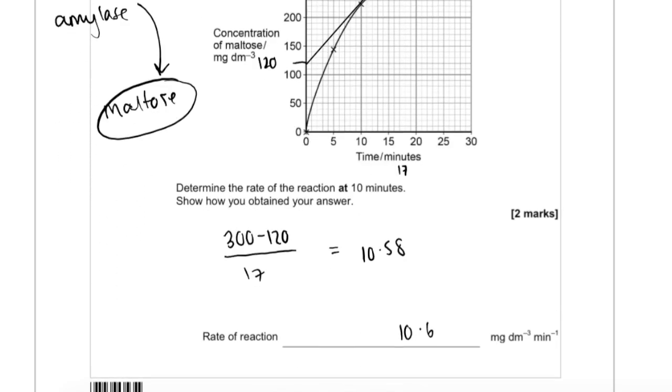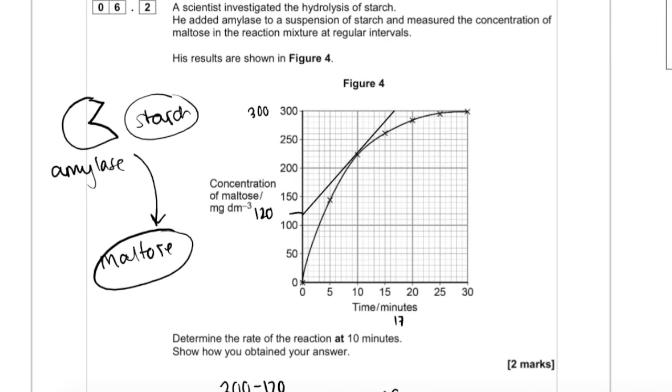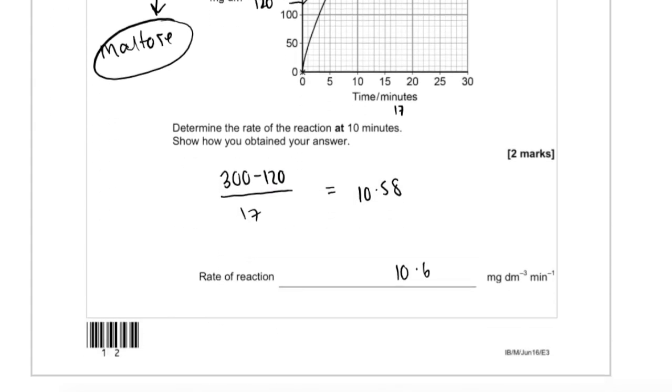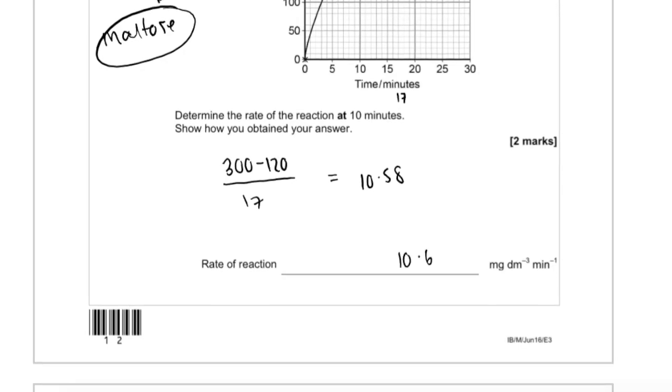So I've already done this here just to speed things up a bit. All you have to do is draw a tangent. A lot of students just pick a point at 10 minutes and divide the concentration by time, but we're looking at rate. So we draw a tangent and then work it out like that. I found that was 300 minus 120, divided that by 17, and that gave me the answer 10.58.